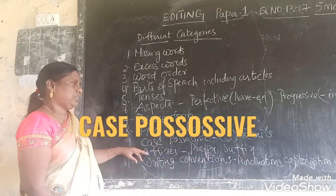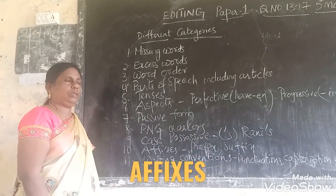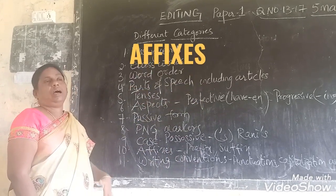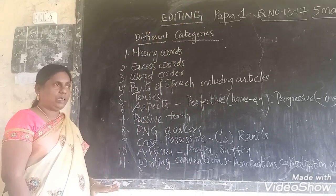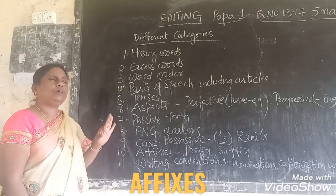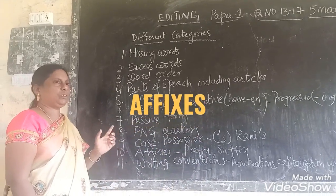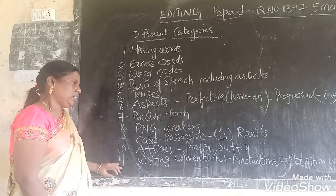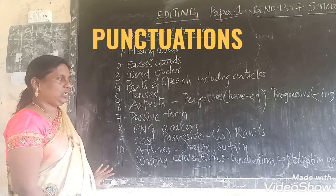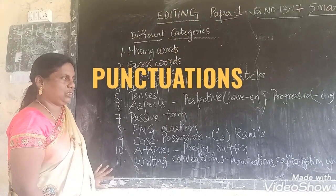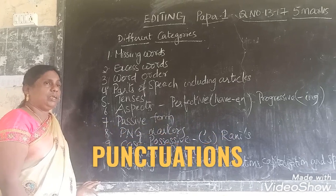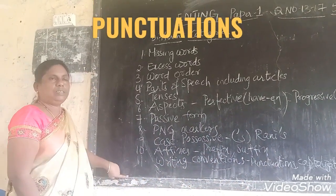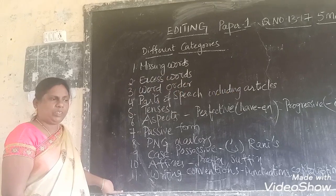The affixes — prefix and suffix. We have to see whether the verb has a prefix or suffix, and whether the prefix or suffix used is appropriate for the sentence. The writing conventions such as punctuation, capitalization and spelling — it is a must. So these are the different categories involved in editing.